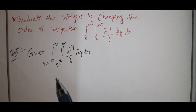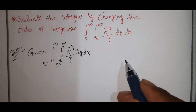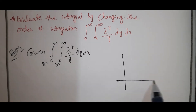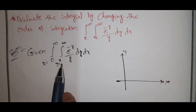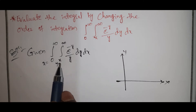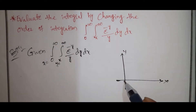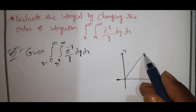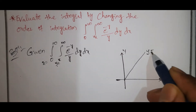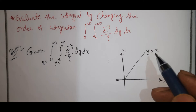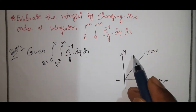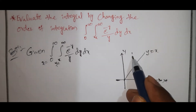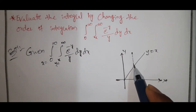y equal to x is the straight line. This is the x-axis, this is the y-axis. This straight line is y equal to x, going to infinity. Any straight line is y equal to x — that is to infinite.